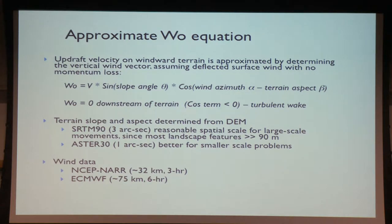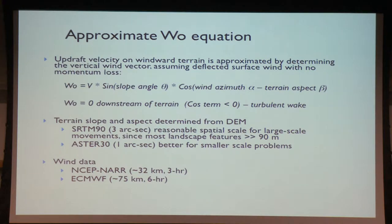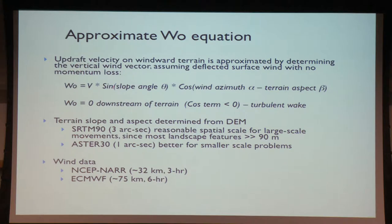The formula is: W = wind magnitude × sin(slope angle) × cos(difference between terrain aspect and wind direction). This is only applicable on the upstream side — downstream of terrain you have downdrafts for the most part, so we assume W is zero on the downwind side. If I have wind data and a digital elevation model, I can do this calculation easily.